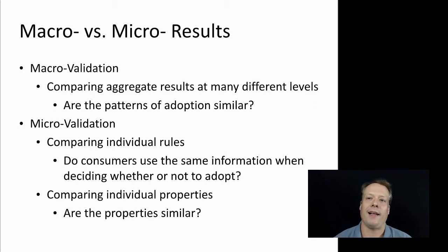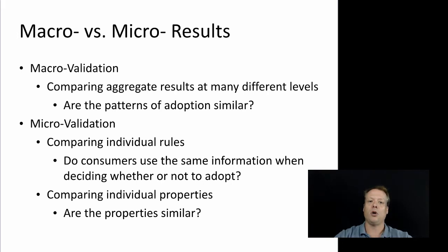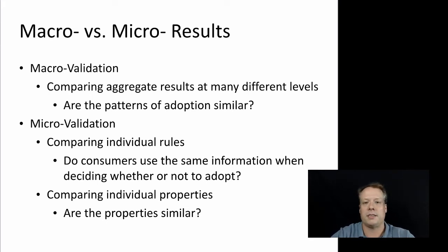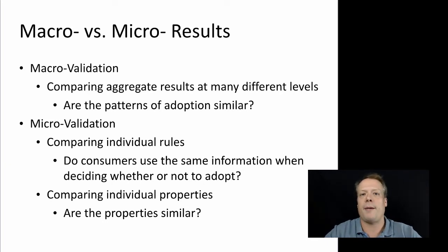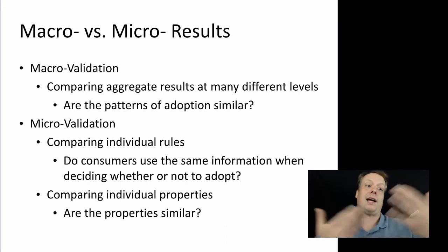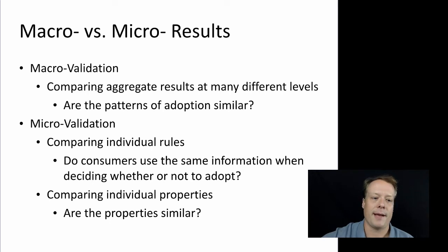You can also think about micro validation. Micro validation is whether the individual rules of the agents and the individual properties of the agents correspond in some meaningful way to real-world rules and properties. Do consumers use the same information when deciding whether or not to adopt? There is a lot of theory that says the two largest forces on consumers making a decision to adopt or not are advertising and word of mouth — and those are the two properties we're using in that model. The agents in the diffusion model basically have one property: did I adopt the innovation or not? And yes, that is a similar property to something we have in reality. So we're starting to pass these levels of validation.